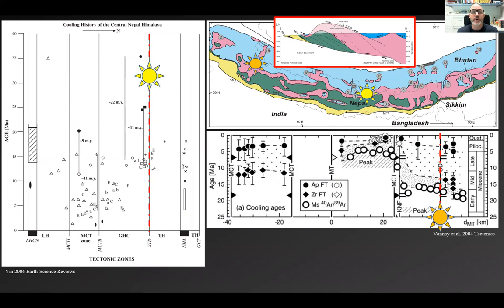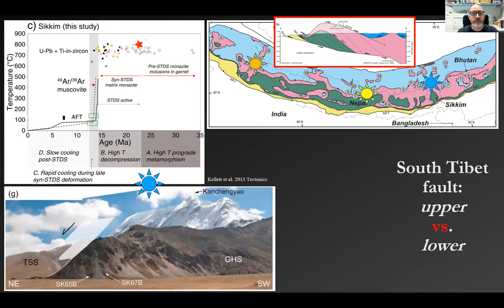Normal faults are expected to have thermochronological signatures wherein the footwall should show much younger cooling ages versus the hanging wall. The South Tibet fault does not match this pattern. Here it is for the central Nepal Himalaya in terms of compiled thermochronological data — almost exclusively Argon Muscovite ages crossing the fault with no particular distinction in age. The same pattern is true for the Sutlej River region. In both cases, the cooling ages across the fault are nearly identical, suggesting a flat fault rather than a dipping normal fault. Farther east, things look a bit different: the South Tibet fault footwall does have a dramatic late rapid cooling event from temperatures much higher than those recorded in the hanging wall, matching the predictions of a normal fault and interpreted to represent the upper South Tibet fault.